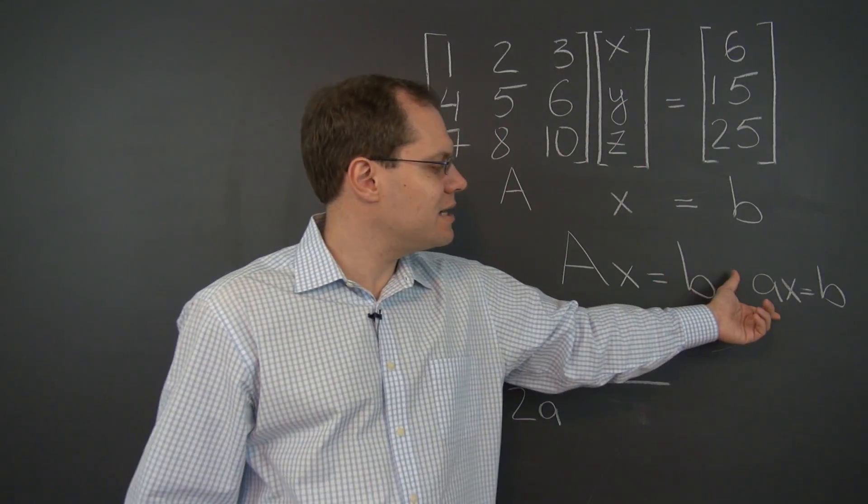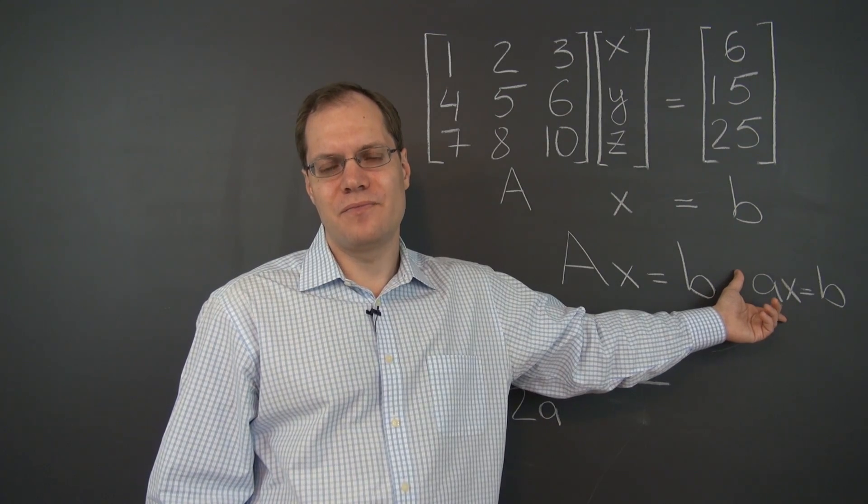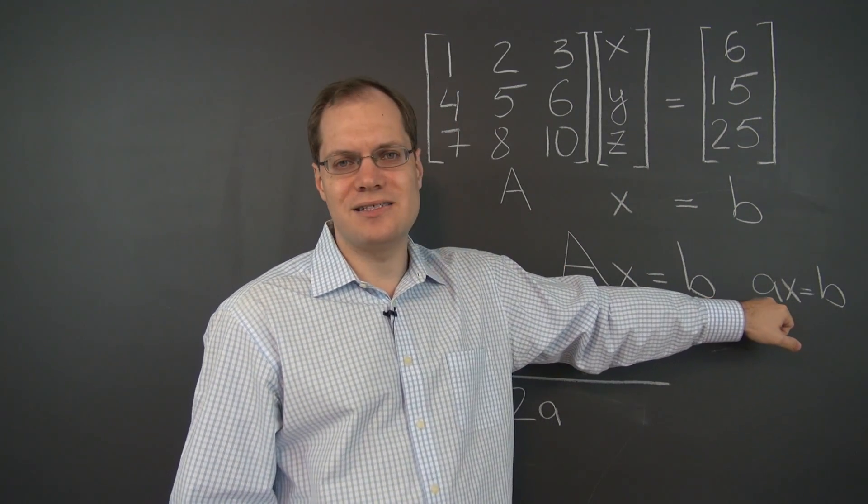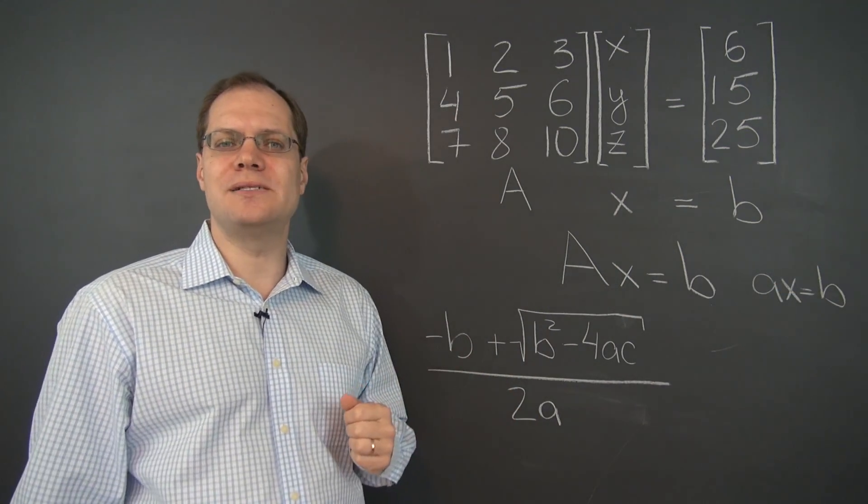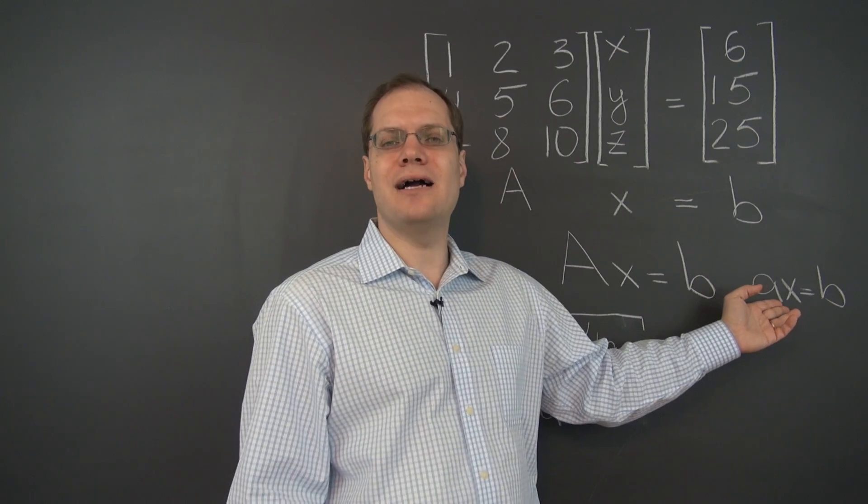And when we write down AX equals B, we immediately know how to solve it. If A is not zero, X equals B over A. Divide both sides by A. And that will isolate X.